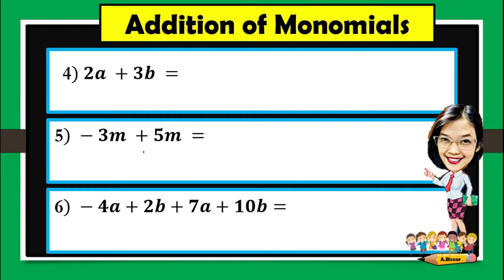For number 4, 2a plus 3b. As you observe, the variables are not the same, which means they are unlike. And if the terms are unlike, then we cannot combine them. And therefore, the answer is still 2a plus 3b.